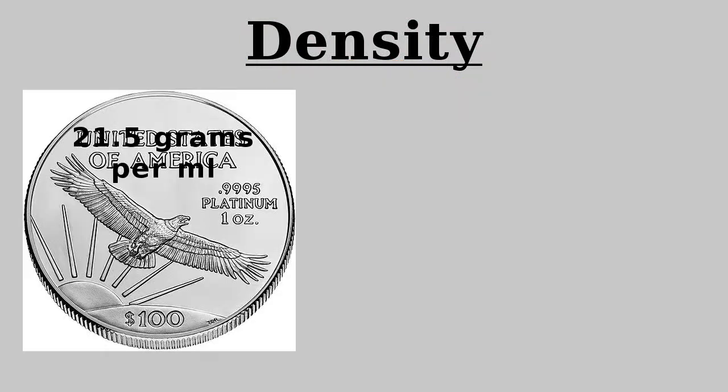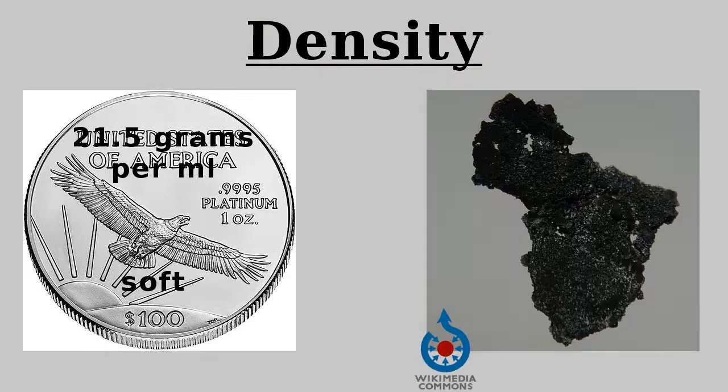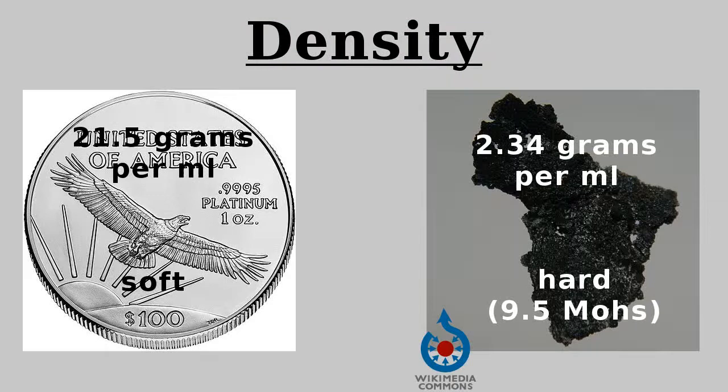Consider that platinum, the third densest of all elements, is soft and weak. Boron has a very low density, but is very hard.